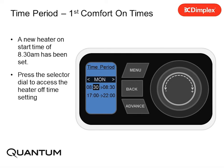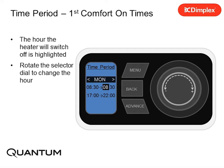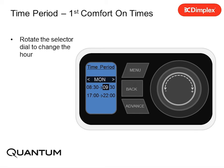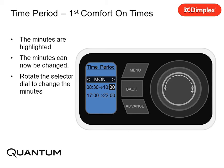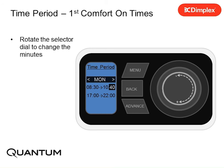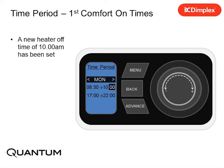Press the selector dial to access the heater off time setting. The hour the heater will switch off is highlighted. Rotate the selector dial to change the hour. A new heater off time of 10:30am has been set. Press the selector dial to access the minutes. Rotate the selector dial to change the minutes. A new heater off time of 10am has been set.